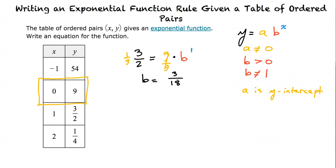Can this be simplified? If I divide both the numerator and the denominator by 3, this will simplify it to 1 over 6. So b equals 1 over 6.